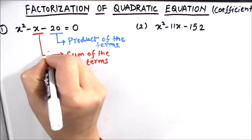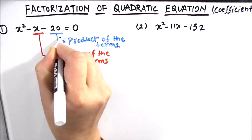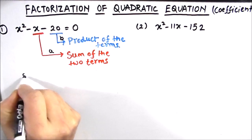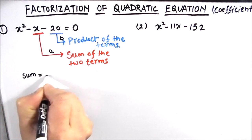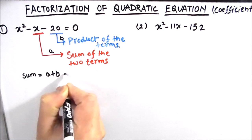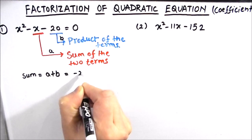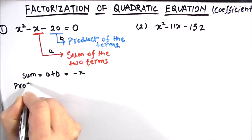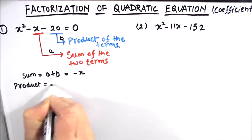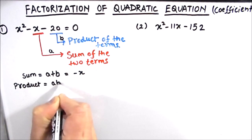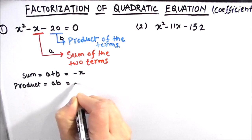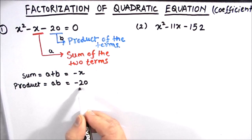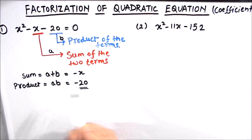Let's name the numbers as a and b. For finding the factors, the sum — that is a plus b — should be equal to negative 1, and the product — which is a times b — should be equal to negative 20. A good strategy is to find the factors of this number which is the product.